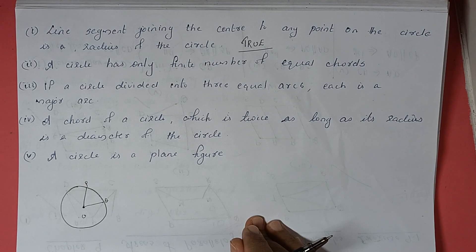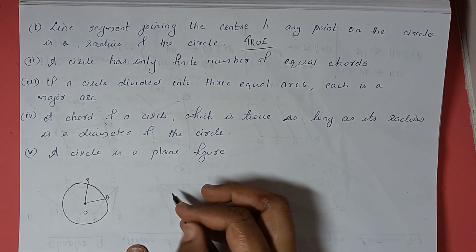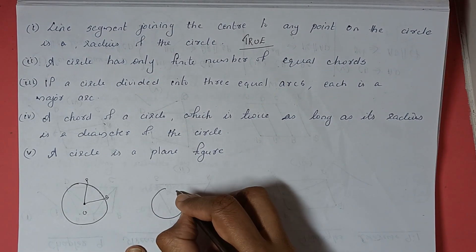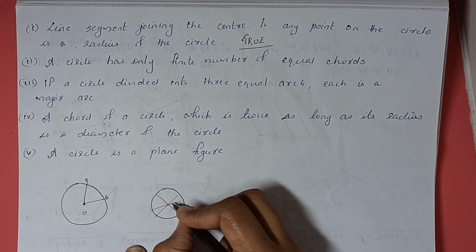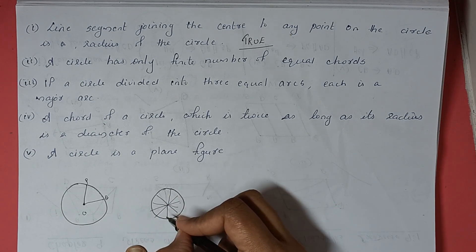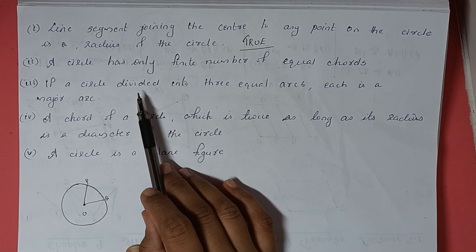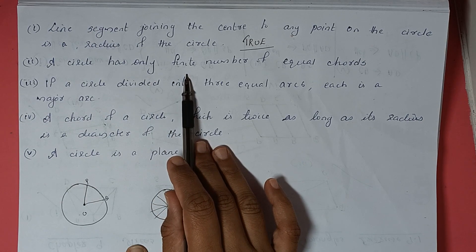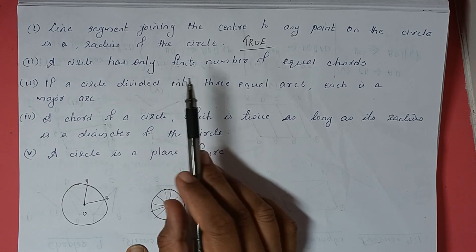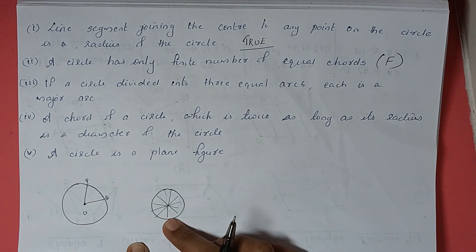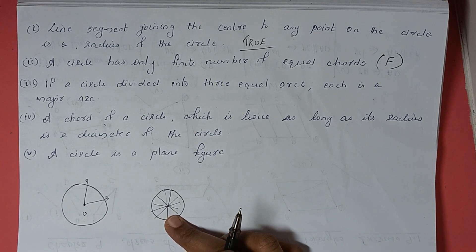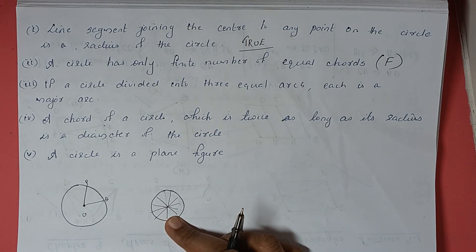Next: a circle has only a finite number of equal chords. Through the center we can draw diameters in any direction — this diameter, this diameter, this diameter, as many as we want. So the circle has an infinite number of equal chords. This statement is false, because we can draw infinite diameters, giving us infinite equal chords.